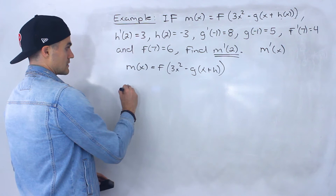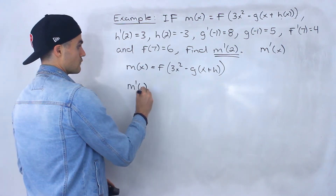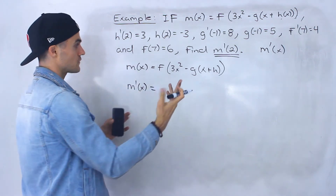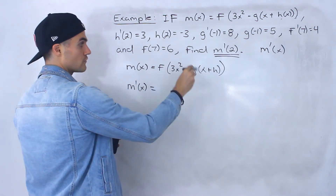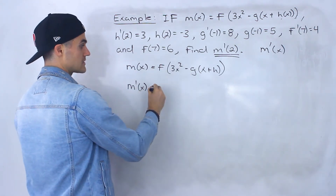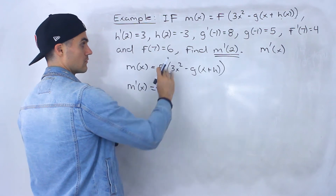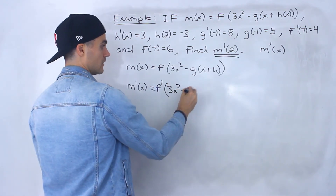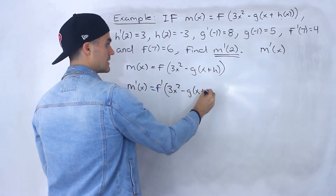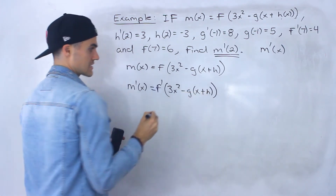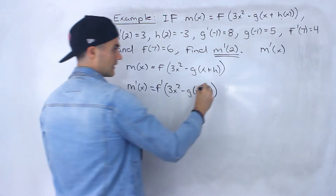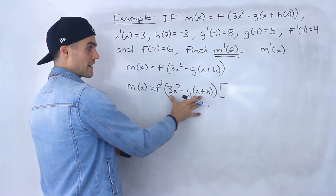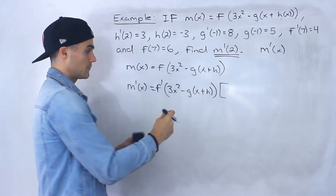So let's find the derivative and get the expression. We start with the outermost function, which is f of all of this. The derivative of that is going to be f prime of all of that — everything inside the bracket stays the same — and then we multiply by the derivative of the bracket.